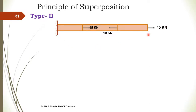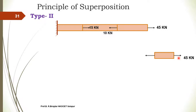For the first body on the right hand side, the 40 kN force is acting, so we write the first 45 kN. As per the static law, an equal and opposite force has to be applied on the left hand side, so again 45 kN. This is the free body diagram of the first body.